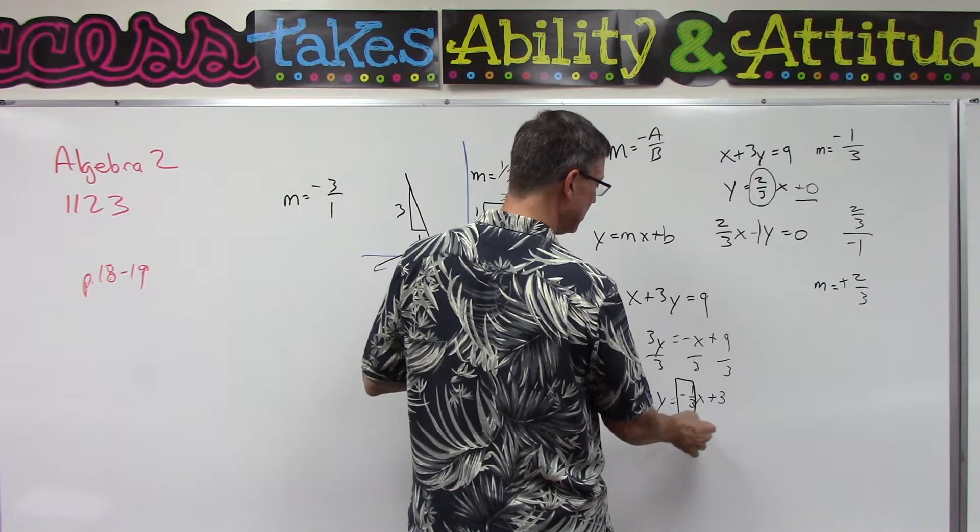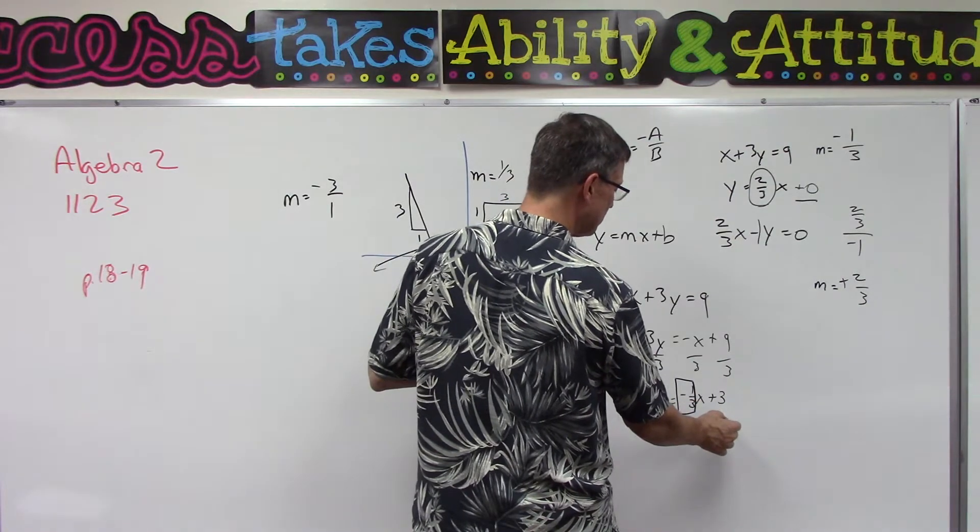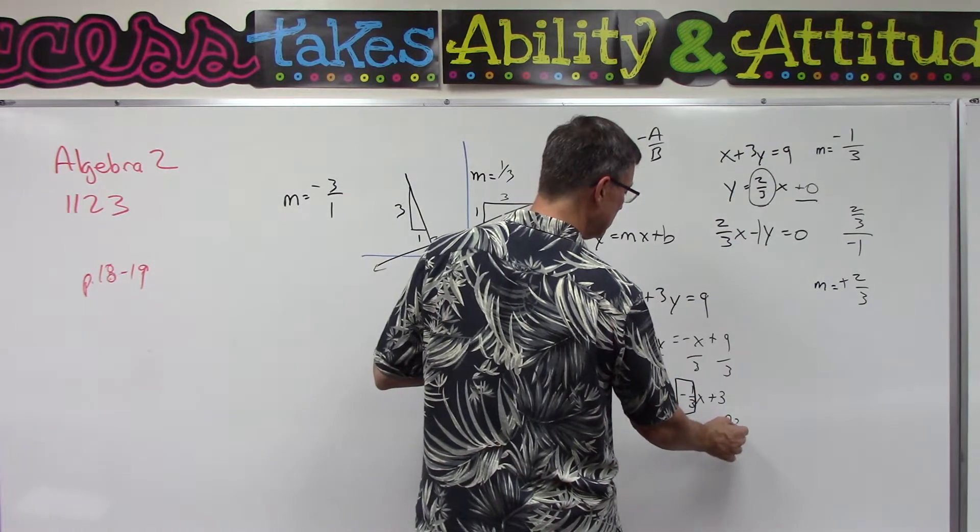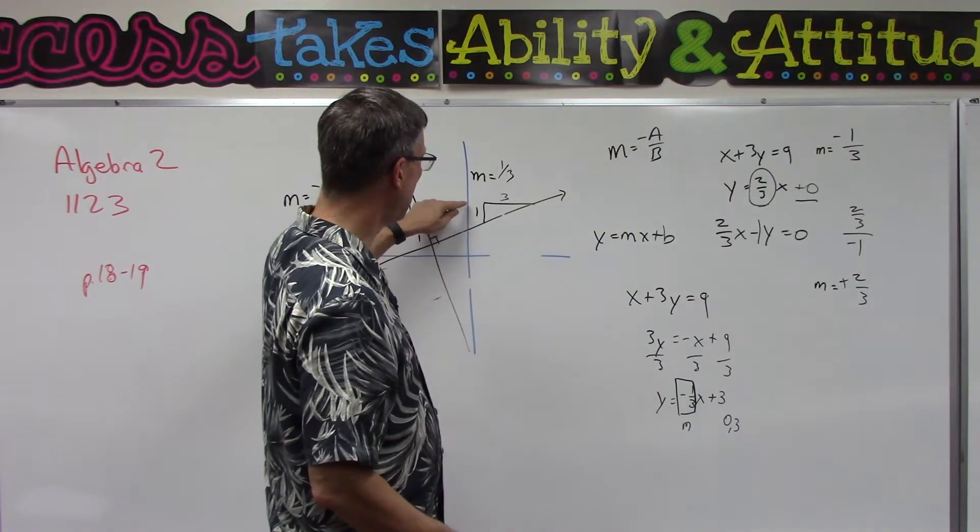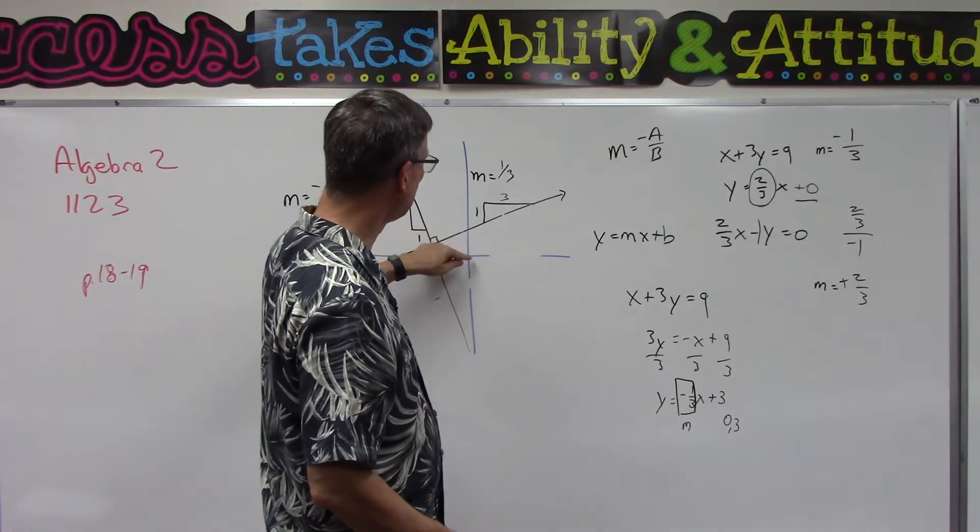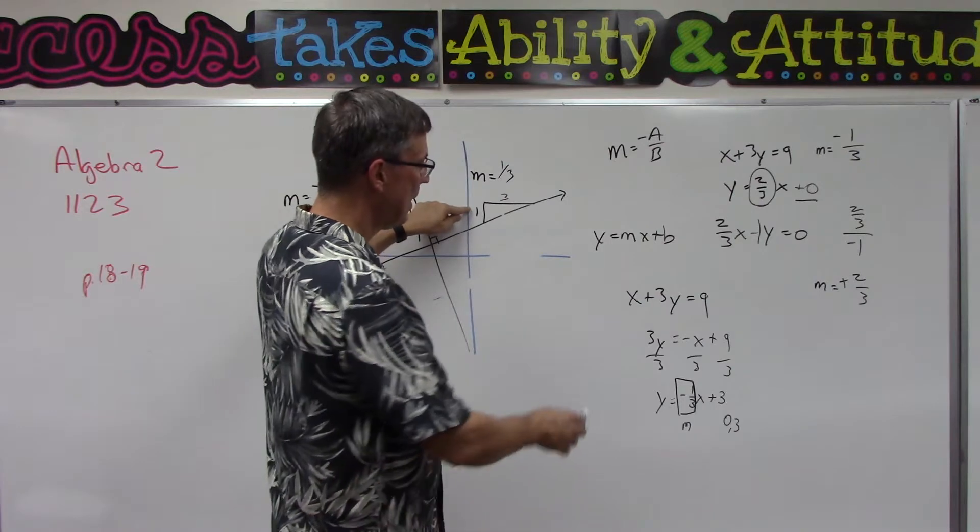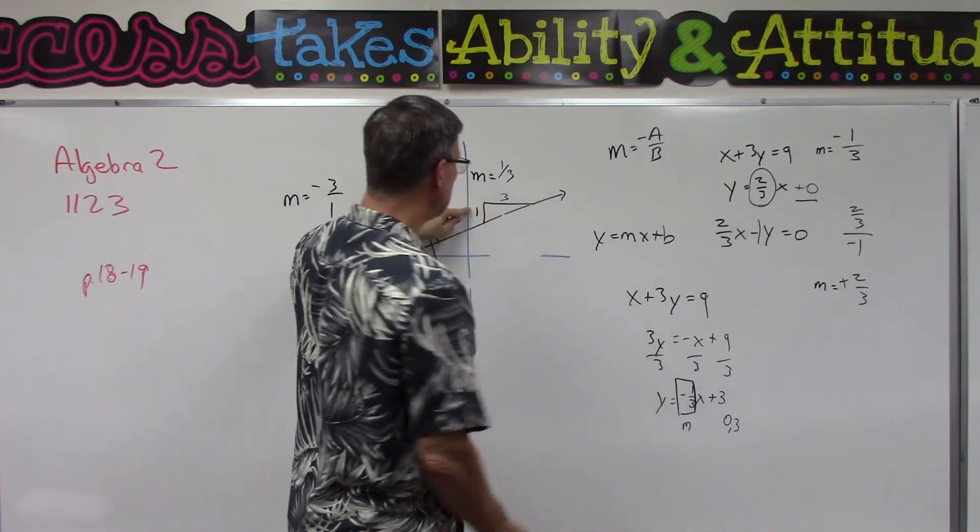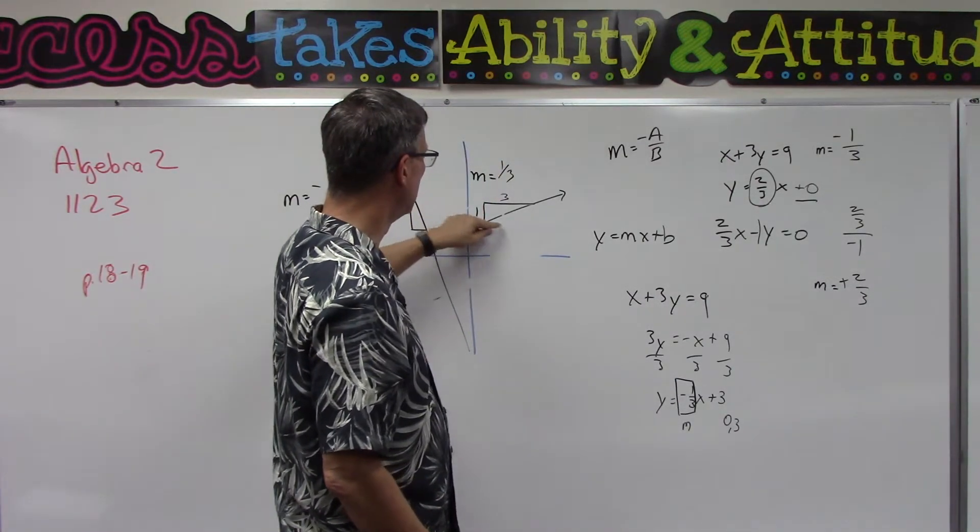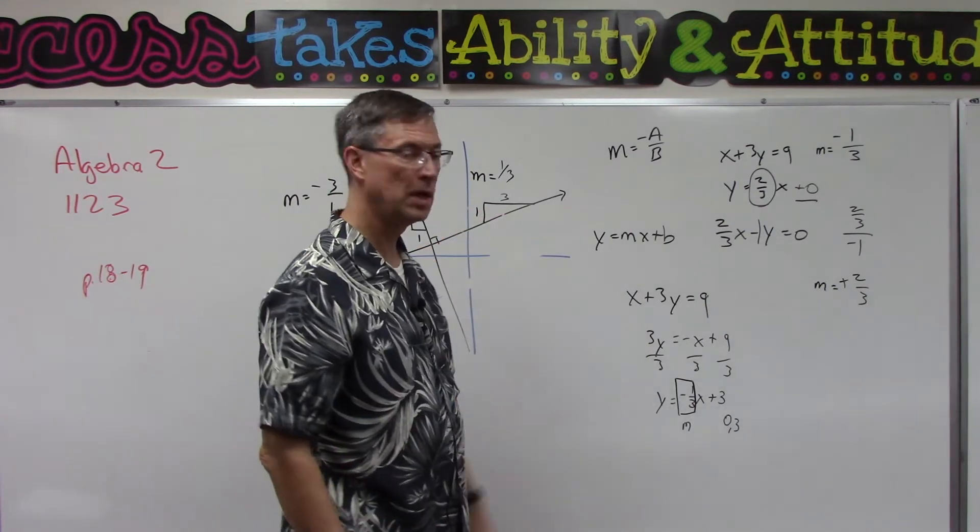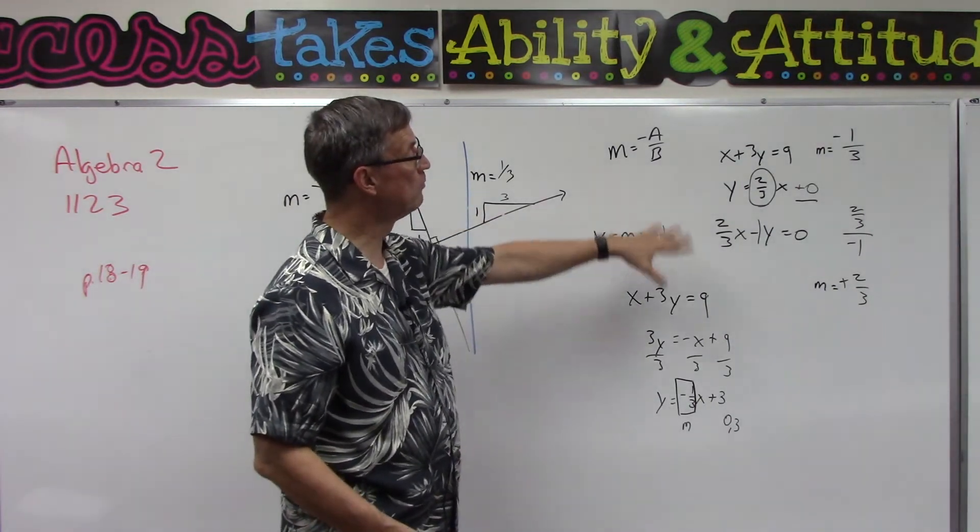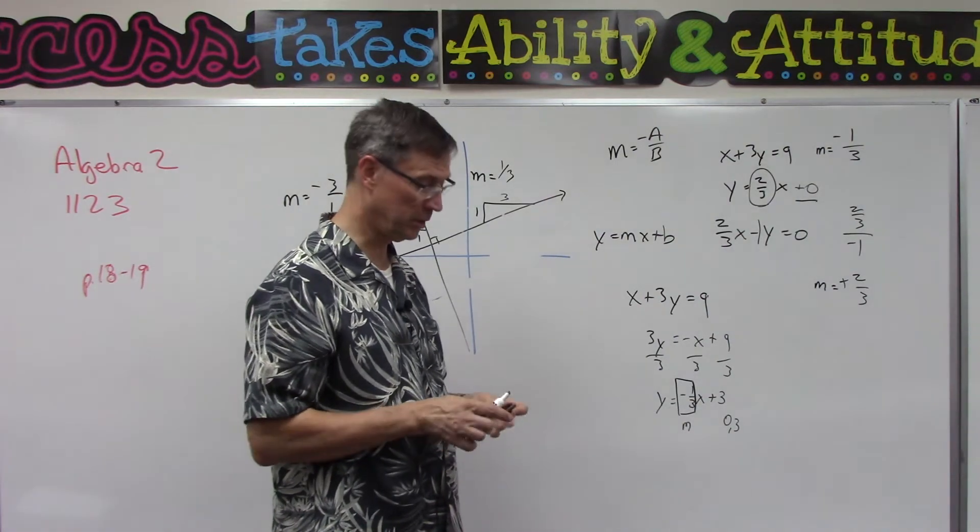And then this tells me that I'm going to use the point zero three to find the starting point on the graph. All right, so if I was graphing this I would go up here to zero three, and then use the slope negative 1, so down 1 over 3, down 1 over 3, connect those dots and you have a line. So they want you to graph both of these lines on the same graph.